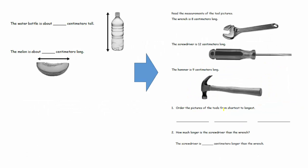Looking at how the problems develop, it goes from straightforward measuring of objects, to taking objects where we know the measurements, ordering them, and then answering 'how much longer' questions. Really working on that vocabulary, modeling with concrete objects, modeling with students of different sizes, and modeling with real-life objects — why should we measure a picture of a wrench when we could bring in a real wrench and measure it?